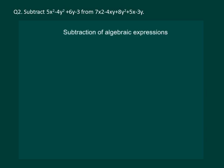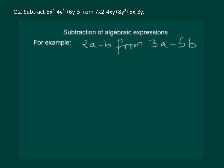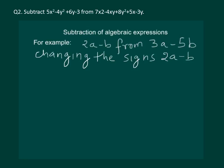In order to subtract an algebraic expression from another, we change the signs of all the terms of the expression which is to be subtracted, and then the two expressions are added. For example, if we have to subtract 2a minus b from 3a minus 5b, we will have to change the signs of 2a minus b. On changing the signs, 2a minus b becomes minus 2a plus b.